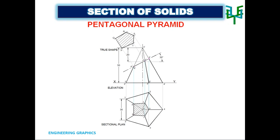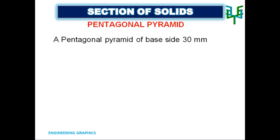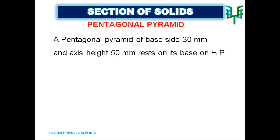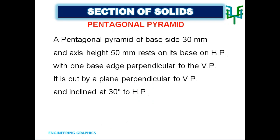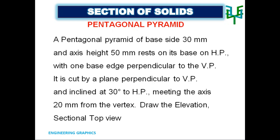In this video, we are going to discuss the section of a pentagonal pyramid. We will discuss a problem. A pentagonal pyramid of base side 30 mm and axis length 50 mm rests on its base on HP, with one base edge perpendicular to VP. It is cut by a plane perpendicular to VP and inclined at 30 degrees to HP, meeting the axis 20 mm from the vertex. Draw the elevation, sectional top view, and true shape of the section.